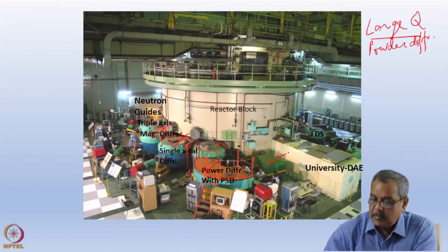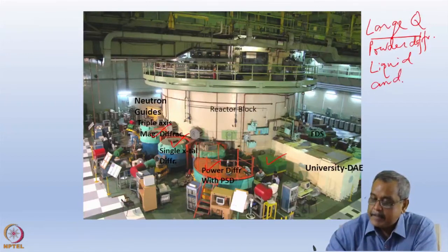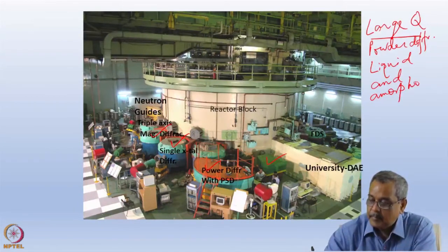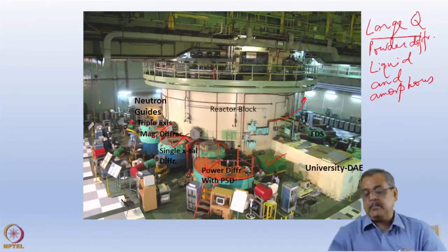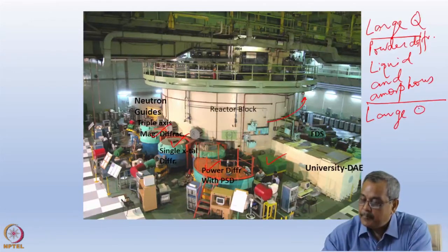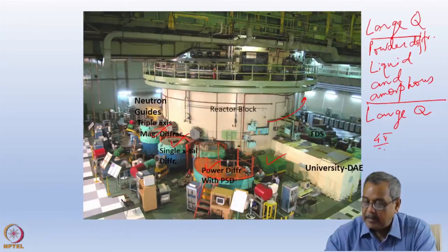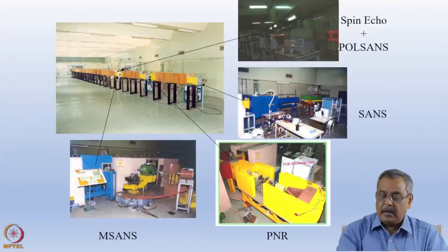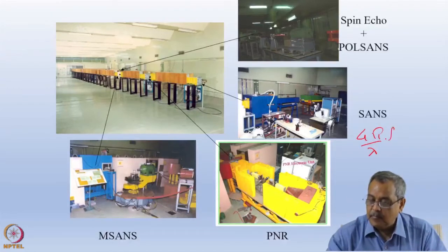Broadly, experiments done inside the reactor hall are in the large Q range — 4π/λ sinθ — using shorter wavelengths. For the guide hall, we have reserved experiments done at low Q — small angle and longer wavelength. The guides transport neutrons through total external reflection just like a mirror, and preferably transport cold neutrons with wavelengths longer than typical thermal neutrons.